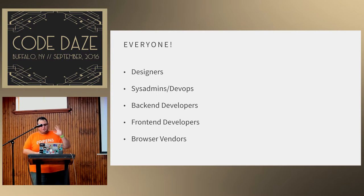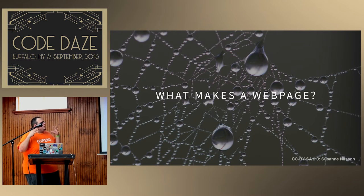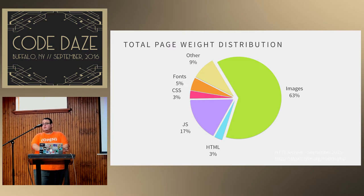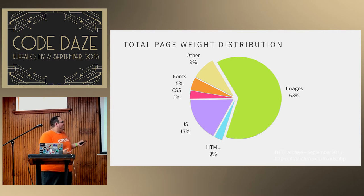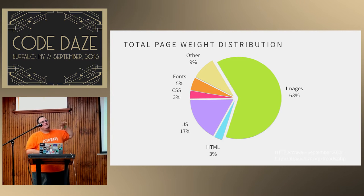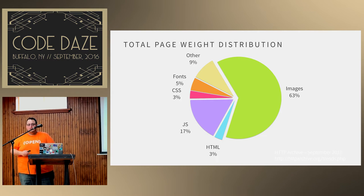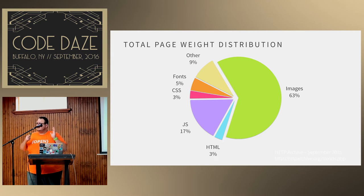Modern web pages are getting bulkier and bulkier. What we're finding these days is that 63% of web pages by weight are images, 17% is JavaScript, HTML and CSS are 3% each, fonts are 5%, and other is 9%. But 63% is images, so anything you can do to make your images perform better is going to have the greatest effect.